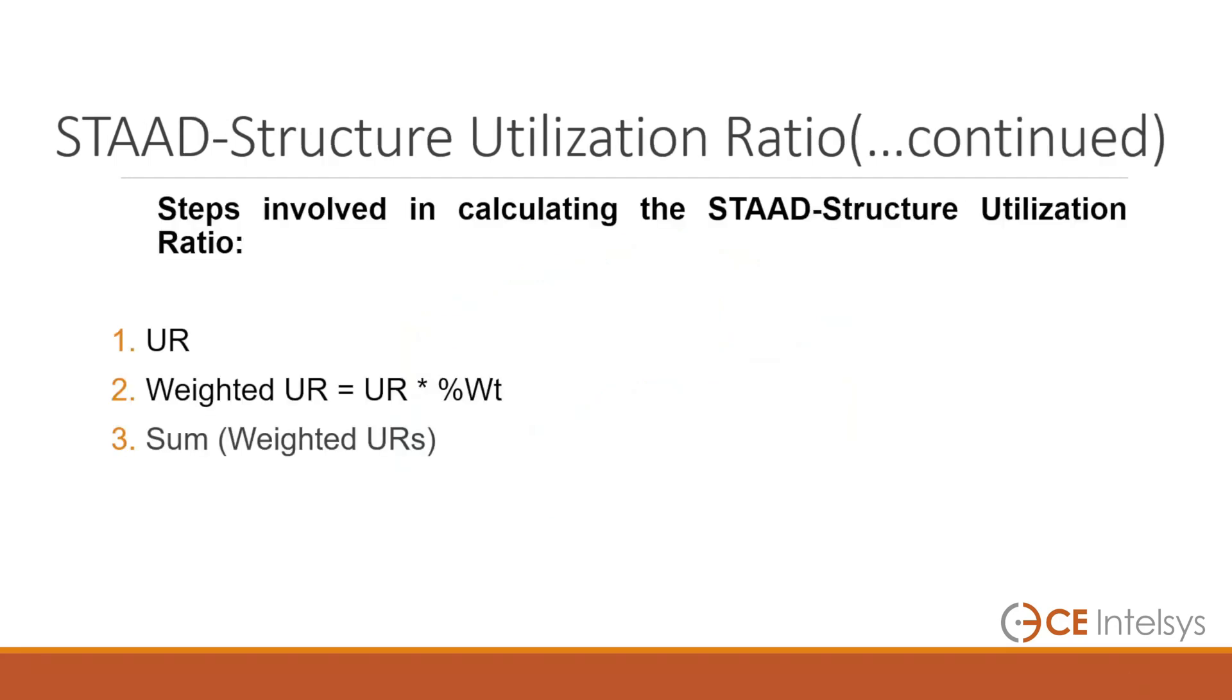Step 1: Get the maximum utilization ratio for all physical members. Step 2: Multiply that maximum utilization ratio with the percentage weight of that physical member. Here the percentage weight is the weight of that member divided by total weight of all designed members.